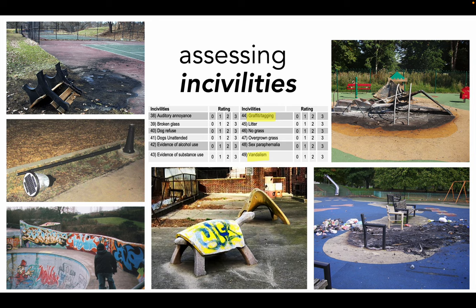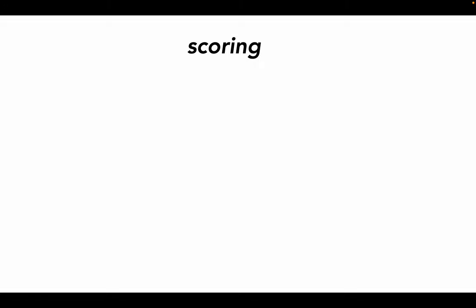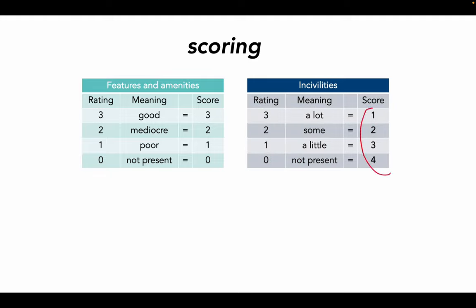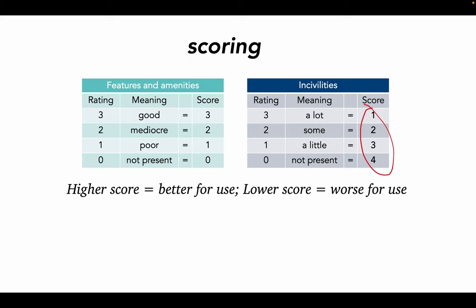Once you've assessed incivilities, you are done with your observation. When you're preparing your data for analysis, you will have to translate your PARA ratings into scores. For features and amenities, the rating you gave under each item is the same as its score. For incivilities, the rating system is flipped — so a rating of 3, which means that a lot of a particular incivility was present, turns into a score of 1, the lowest possible. This may be confusing at first, but remember that PARA aims to assess whether a resource is good for encouraging physical activity. The absence of incivilities is actually a very good thing, deserving of a high score for the resource. A good rule of thumb for scoring is that the higher the score, the better the resource for physical activity use, and the lower the score, the worse it is.